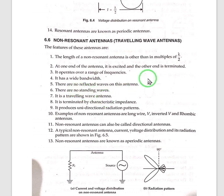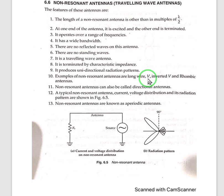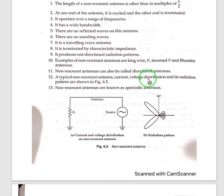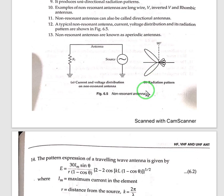One end of the antenna is excited and the other end is terminated. It operates not on a specific frequency but over a range of frequencies — it has a wide bandwidth. There are no reflected waves and no standing waves on this antenna. It is a travelling wave antenna, terminated by a characteristic impedance, and produces a unidirectional radiation pattern. Examples include the V-inverted rhombic antenna or a long wire antenna. They are also called directional antennas.